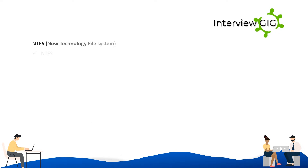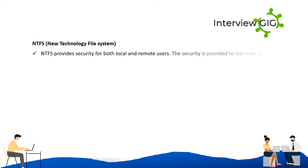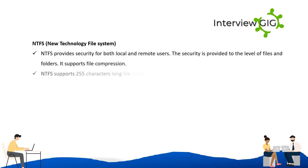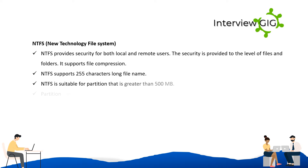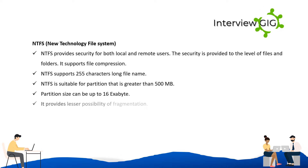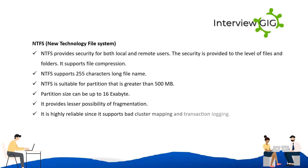FAT is not reliable since it does not support bad cluster mapping. NTFS (New Technology File System) provides security for both local and remote users at the file and folder level. It supports file compression, supports up to 255-character long file names, and is suitable for partitions greater than 500 megabytes. Partition size can be up to 16 exabytes. NTFS provides lesser possibility of fragmentation and is highly reliable since it supports bad cluster mapping and transaction logging.